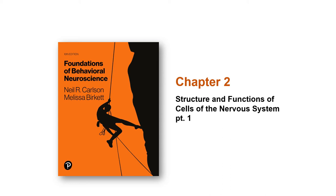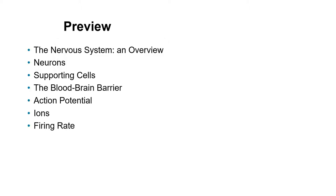Hello and welcome to this behavioral neuroscience lecture on the structure and function of the nervous system, part one. I've broken this into two parts, each relatively short because the material is dense. In this part, we'll cover an overview of the nervous system, neurons and their types, supporting cells, the blood-brain barrier, and how neurons fire with action potentials, ions, and firing rate.